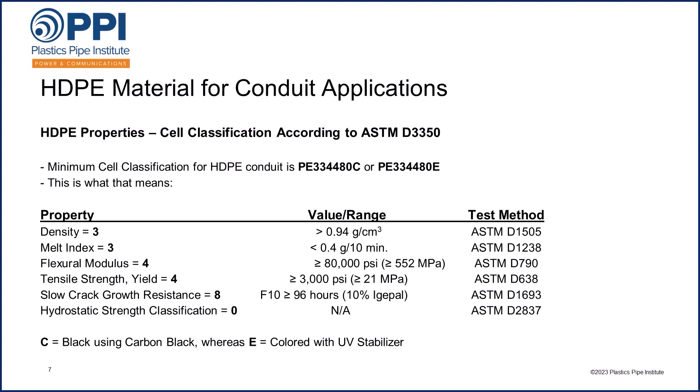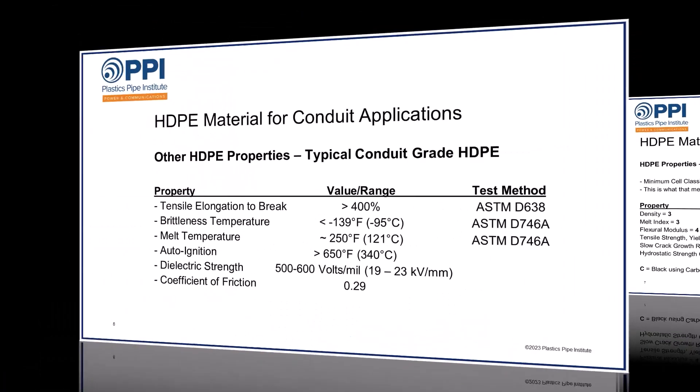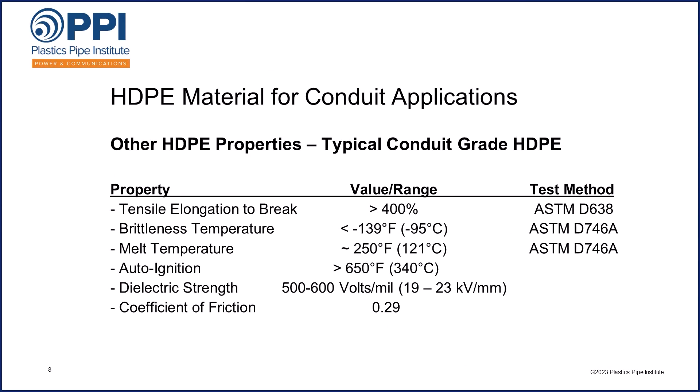There are also other properties which are not part of the cell classification but which are still interesting to know for conduit applications. For instance, when it comes to typical elongation at break, the requirement is for over 400%. If you tried to stretch HDPE conduit, it would elongate at least 400% before it would break. Its brittleness temperature, otherwise known as glass transition temperature where it actually becomes brittle, is below minus 139 degrees Fahrenheit. Its melting temperature is around 250 degrees Fahrenheit. Its auto-ignition temperature is over 650 degrees Fahrenheit. It has a dielectric strength value applicable to some conduit applications of 500 to 600 volts per mil, and its coefficient of friction is approximately 0.29.